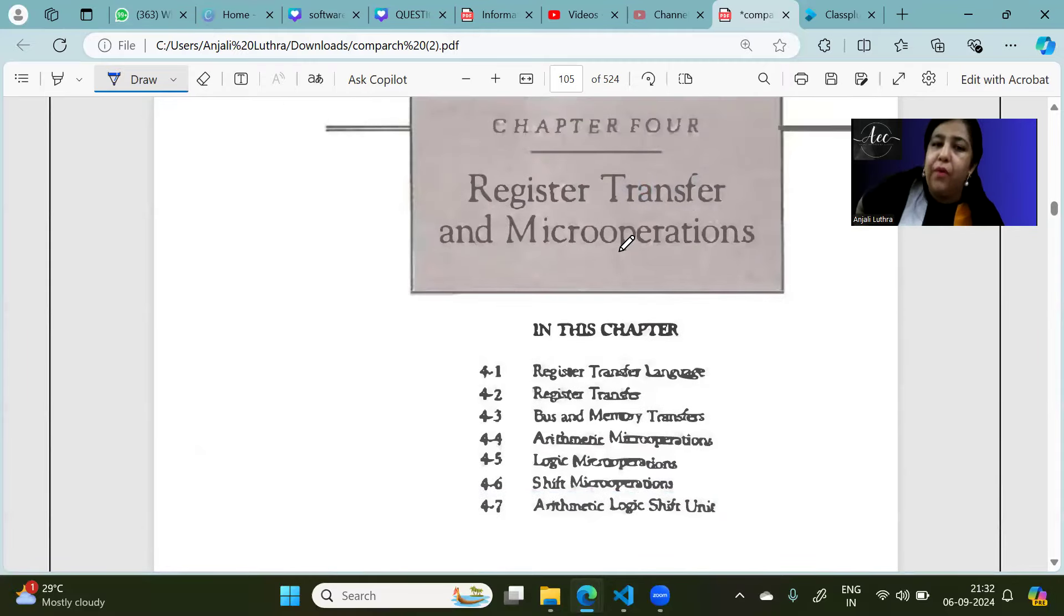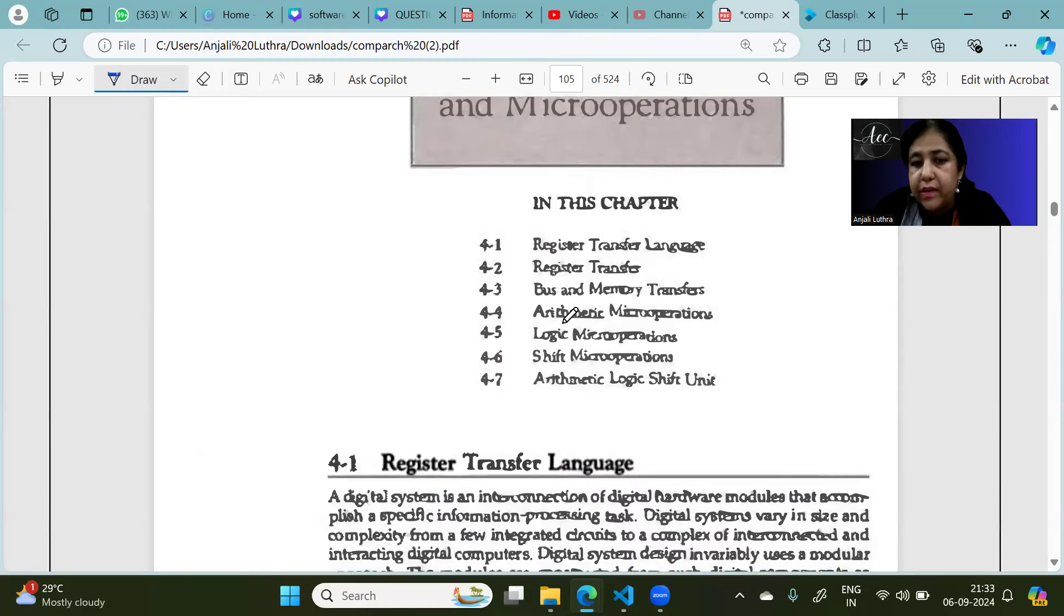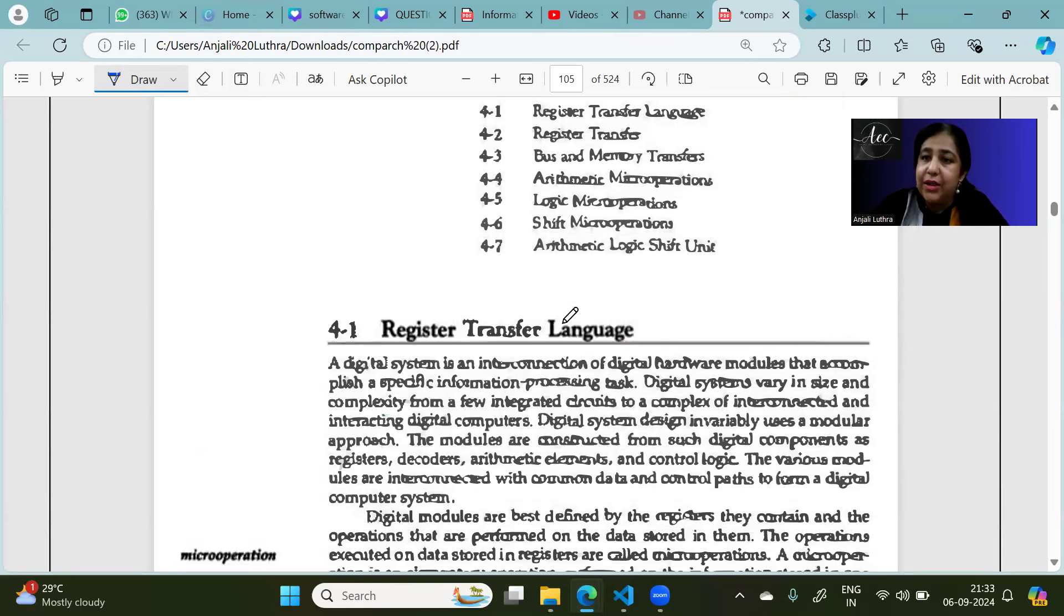So this is our chapter number 4, which is called Register Transfer and Micro-Operations. So what is a register? It's a collection of flip-flops. It is capable of storing a certain bit of data. We can say n bit of data.